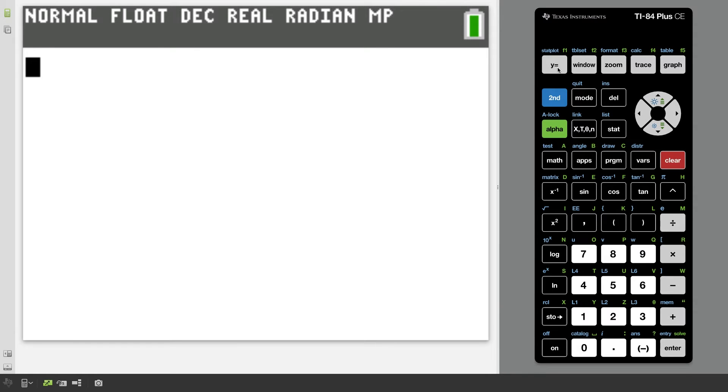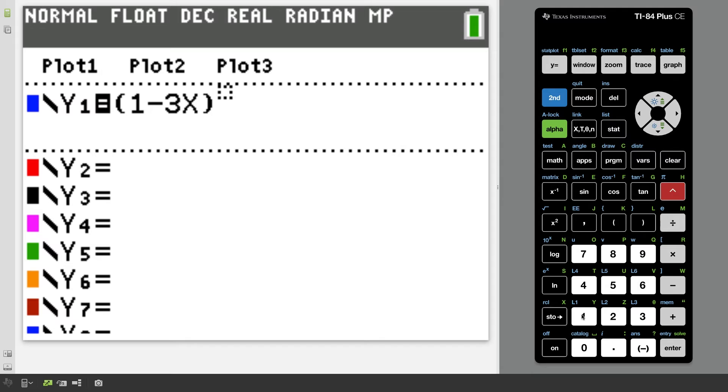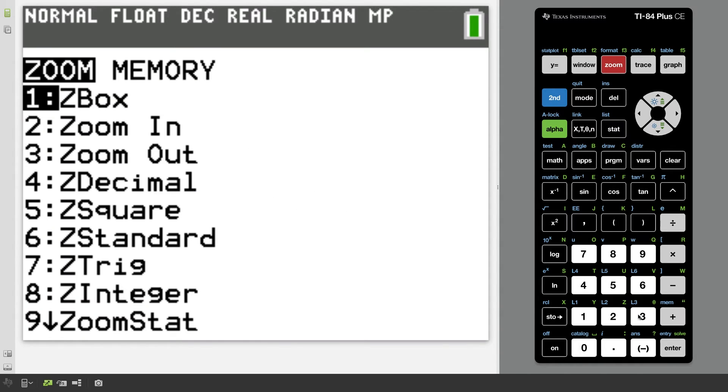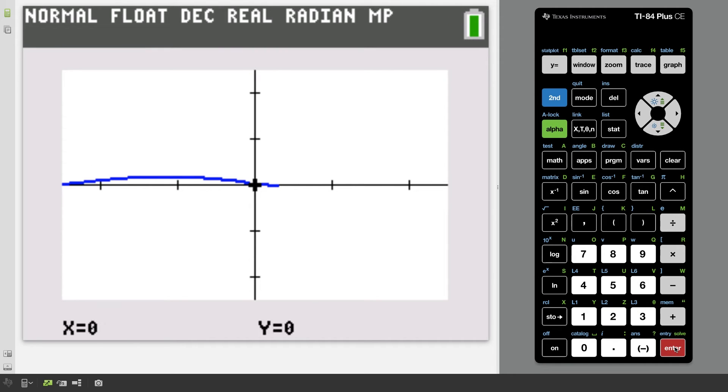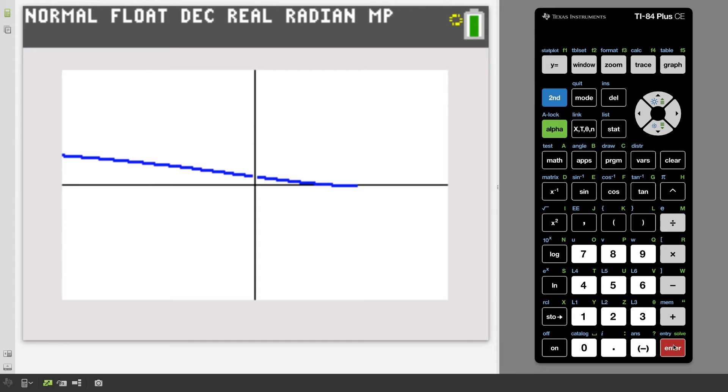Now, if we want to double check our answer, what we could do is we could just type in the original function one minus three x to the cosecant x power, but there is no cosecant button. So we're going to write one over sine x. And if we graph this in standard form here, notice this is a little bit difficult to see. So we could zoom in a few times at the origin, since we're taking the limit as x approaches zero,